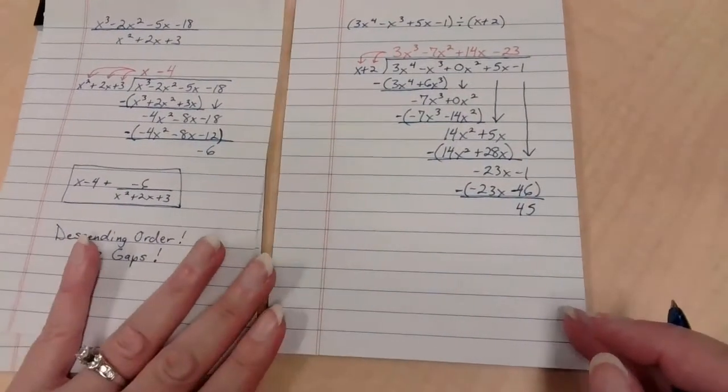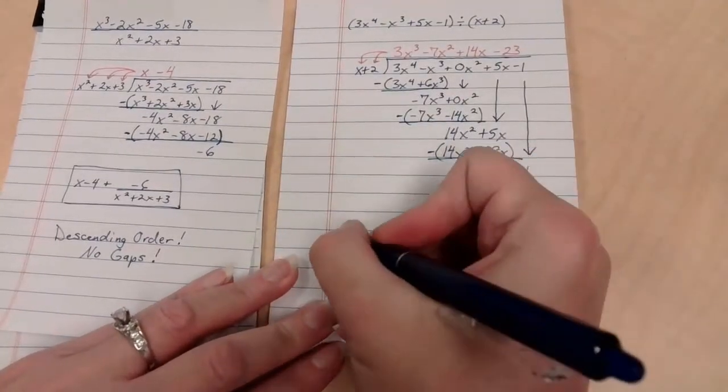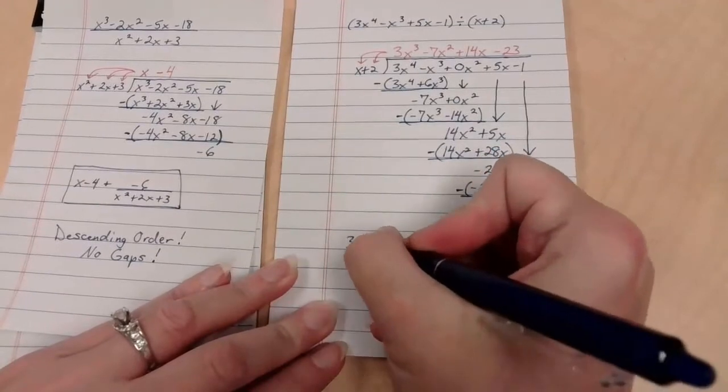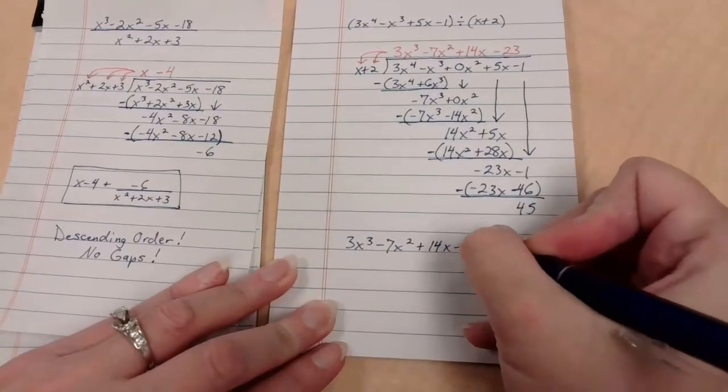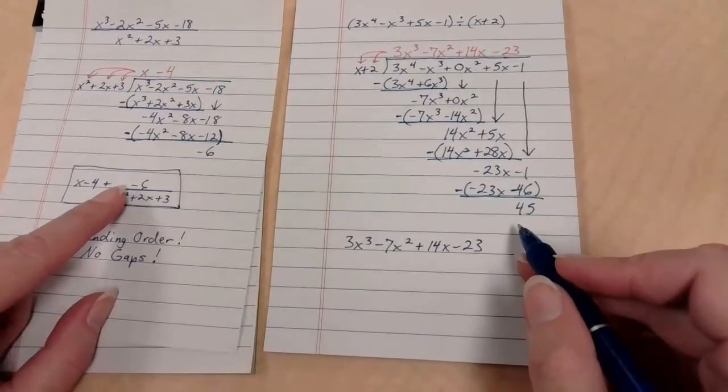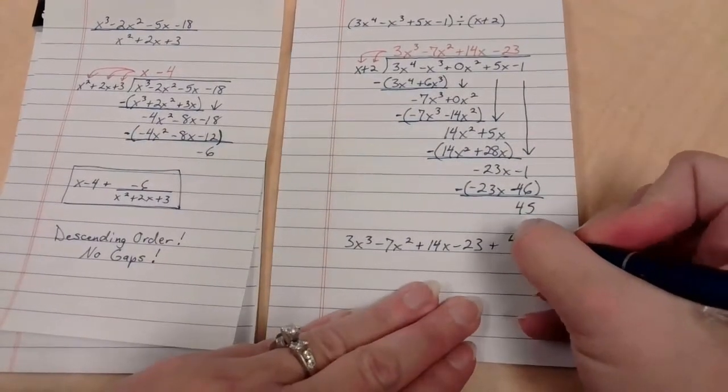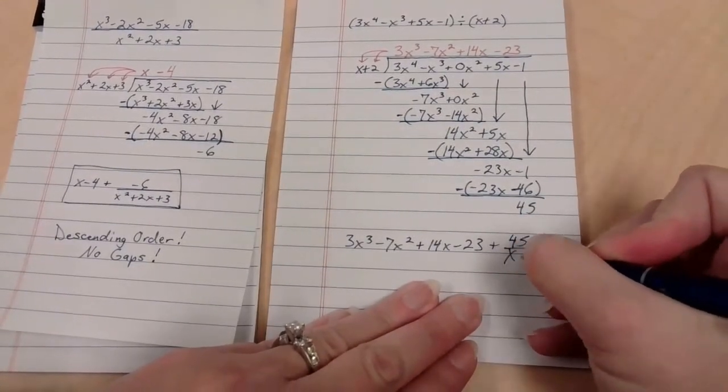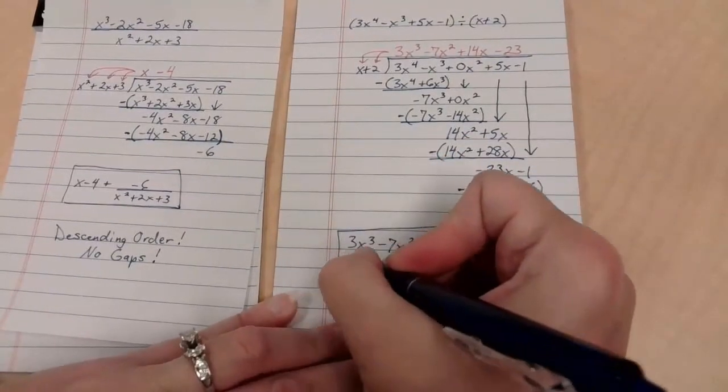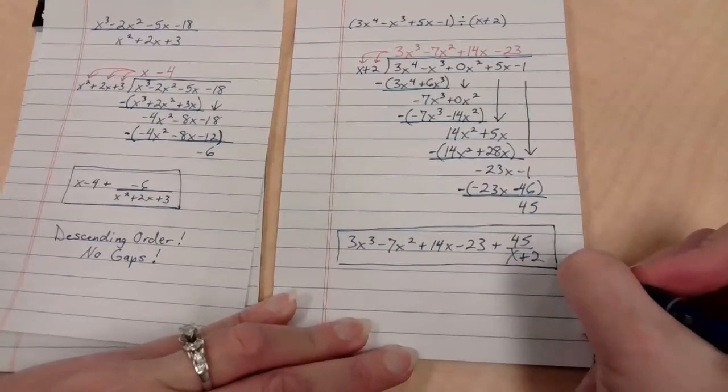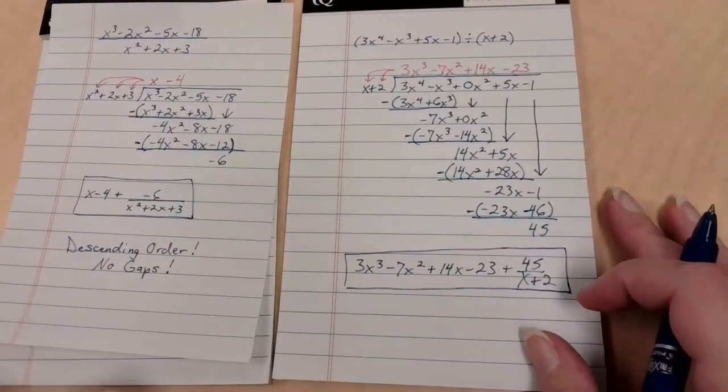Do you remember how you write this answer? We're going to take how many times it goes in. Which is 3x³ minus 7x² plus 14x minus 23. And we're going to take and do remainder over divisor. So 45 over x plus 2. Ladies and gents, that is our answer. So there's not a whole lot of context going on right now. This is just a basic skill that we don't use a lot. But we do need on occasion.